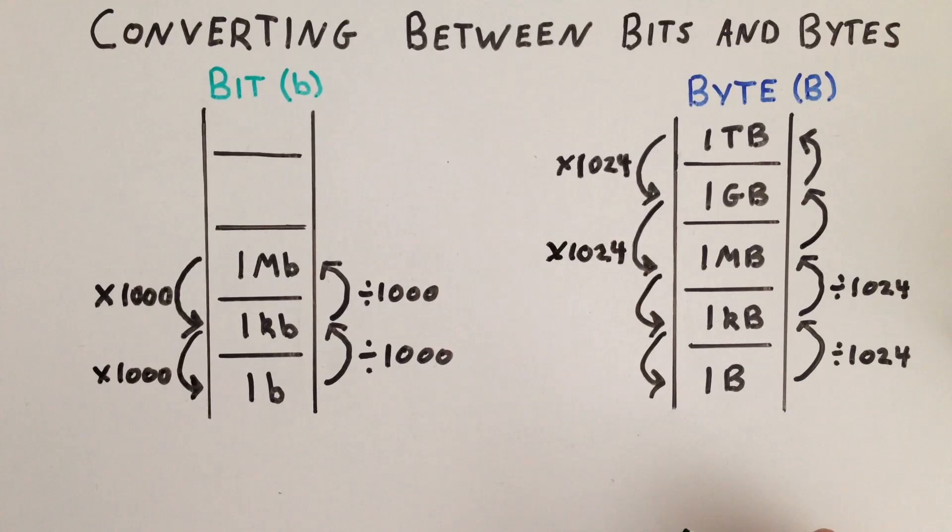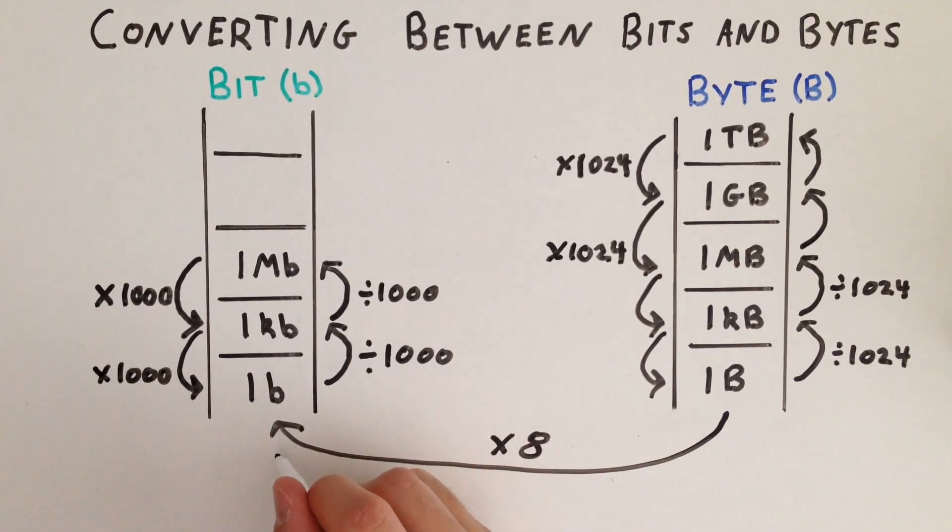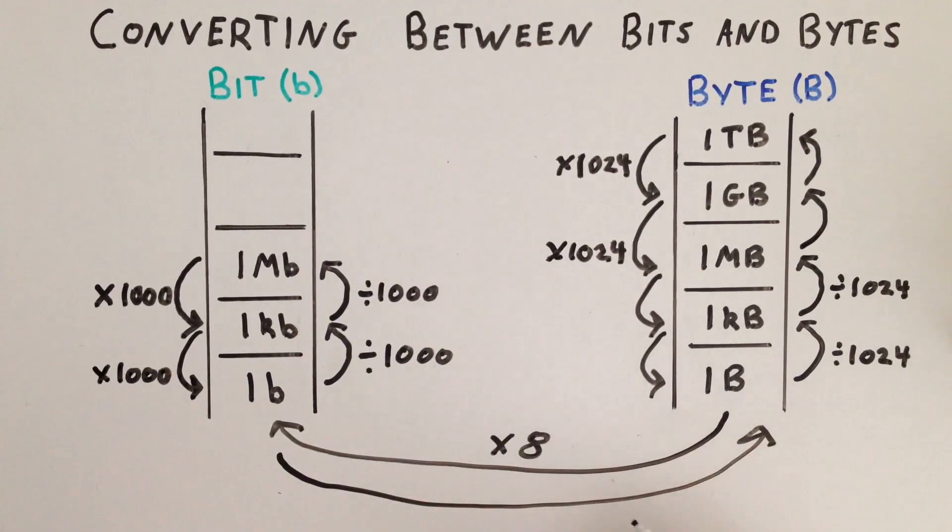In order to cross between the two ladders, you must first be at the base of a ladder. If we're at the base of the byte ladder, to cross over to the bit ladder, we multiply by 8 because there are 8 bits for every 1 byte. If you wanted to cross the other way from the bit ladder to the byte ladder, you would divide by 8. Hopefully that analogy helps when converting between bits and bytes. We'll do some practice questions next video.